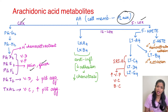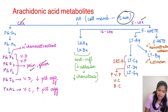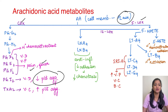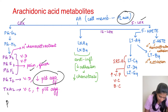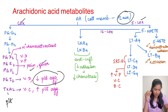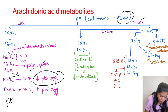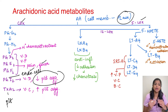Prostaglandin I2 (prostacyclin) causes vascular dilatation and also decreases platelet aggregation. The exact opposite action belongs to thromboxane A2. Thromboxane A2 is produced by platelets and its major actions are vasoconstriction and increasing platelet aggregation. Prostacyclin, on the other hand, is produced by endothelial cells. So prostacyclin and thromboxane A2 have opposite actions.